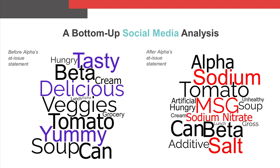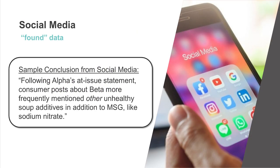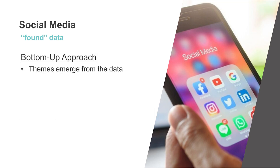Comparing the before and after word clouds, we see a theme emerge from the data that we otherwise may have missed had we only relied on top-down analyses. Following Alpha's ad issue statements, consumers have begun linking Beta to other unhealthy ingredients in addition to MSG, like sodium nitrate. This linkage could exacerbate the harm to Beta. When analyzing found data, top-down analyses are also possible in some situations.